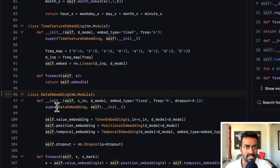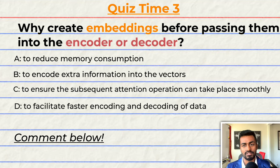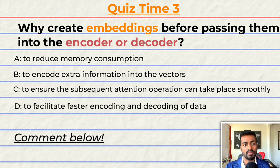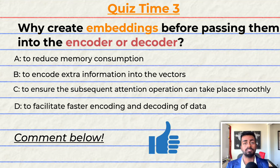And so I hope this entire file now makes a lot more sense, and you can kind of see what has been going on throughout. Quiz time — why create embeddings before passing them into the encoder or decoder? A: to reduce memory consumption. B: to encode extra information into the vectors. C: to ensure the subsequent attention operation can take place smoothly. Or D: to facilitate faster encoding and decoding of data. Comment your answer down below and let's have a discussion. If you do think I deserve it, please do consider giving this video a like because it will help me out a lot. And that's going to do it for quiz time and pass three of this explanation.